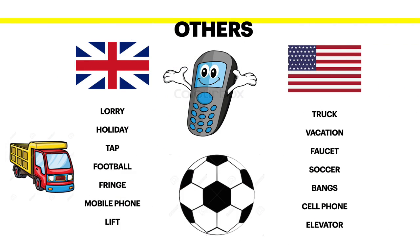Now let's look at some random differences. In the UK people drive lorries, in the US they drive trucks. In the UK we go on holiday whereas in the US they go on vacation. We get our water from the tap in the UK but it's from the faucet in the US. In the UK we play football, which they call soccer in the US. A typical hairstyle in the UK can be a fringe, or bangs in the US. We call our friends on our mobile phones in the UK, but it's a cell phone in the US. We go up in a lift whereas that's an elevator in the US.